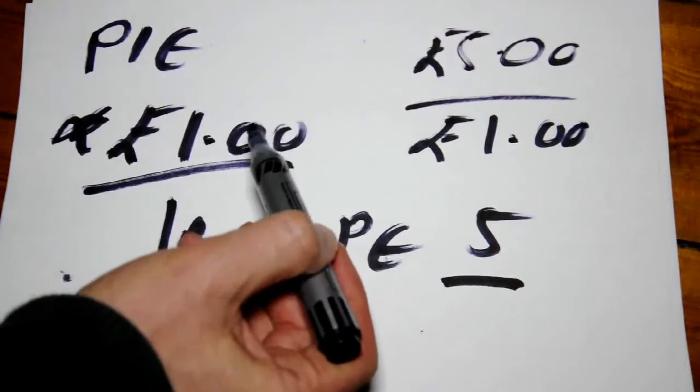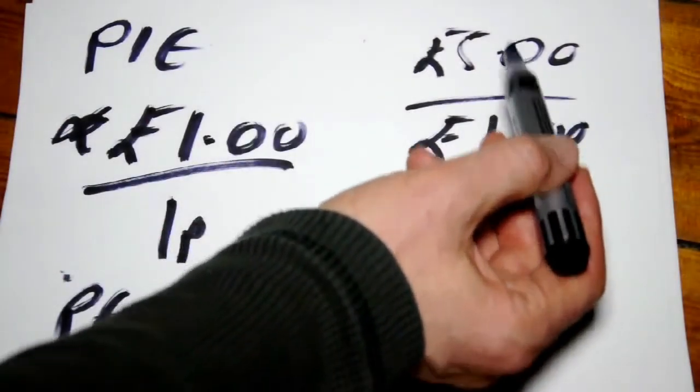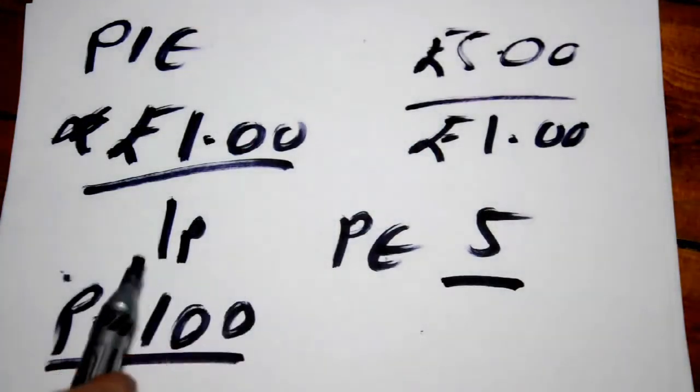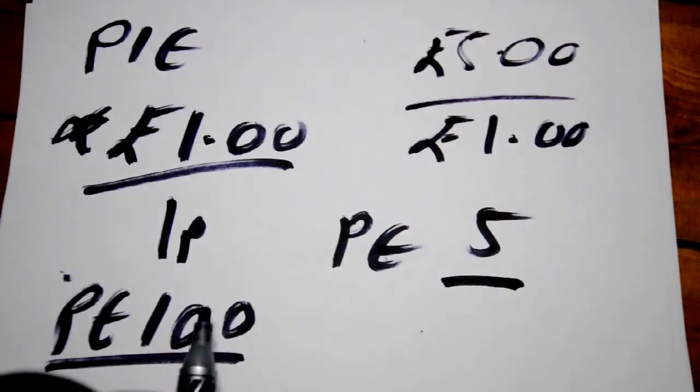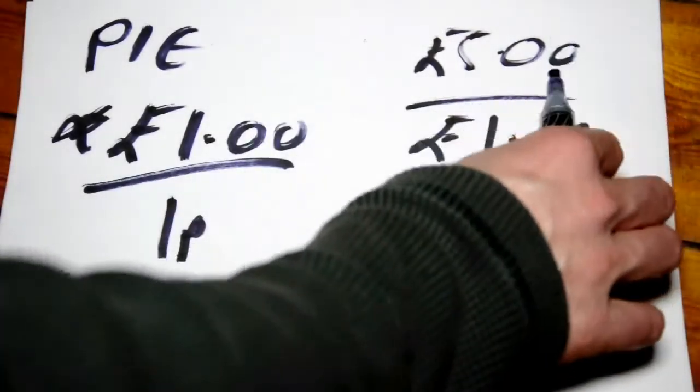So although the share price of Pie in the Sky is lower than the share price of Down to Earth, the valuation, which is the P-E ratio, is 20 times higher. So this company is 20 times more expensive than Down to Earth.